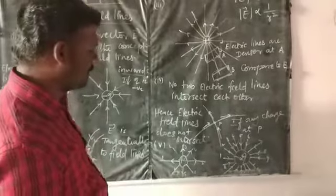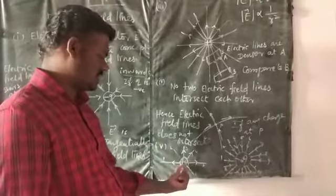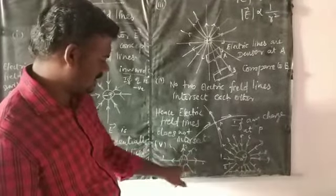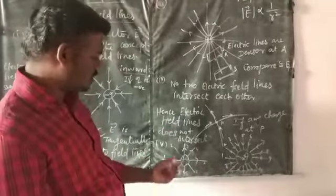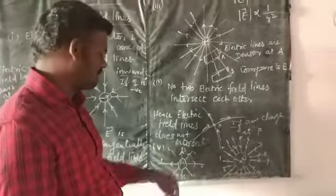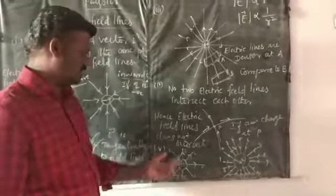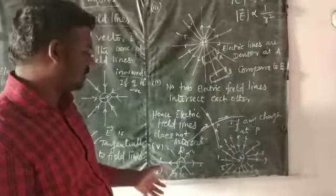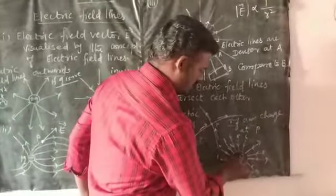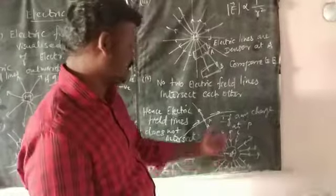The number of electric lines of force emanating from a positive charge plus Q: here 1 plus Q charge produces 8 lines of force originating outward from the positive charge. For a minus 2Q charge, the number of electric lines of force terminating at minus 2Q is 16, acting in the inward direction.